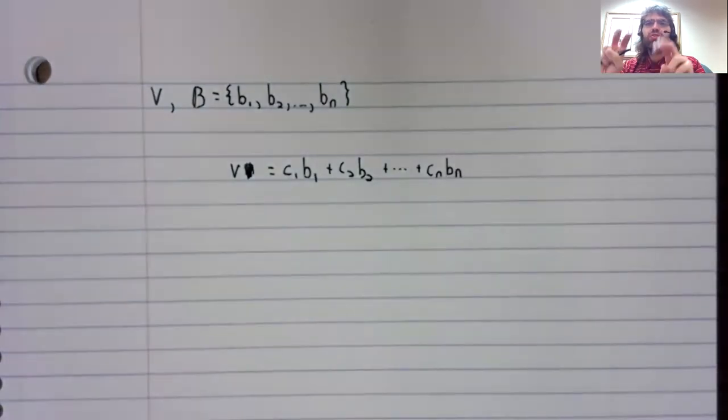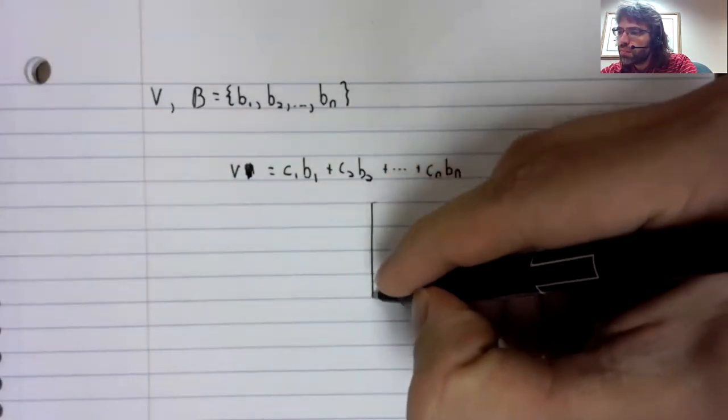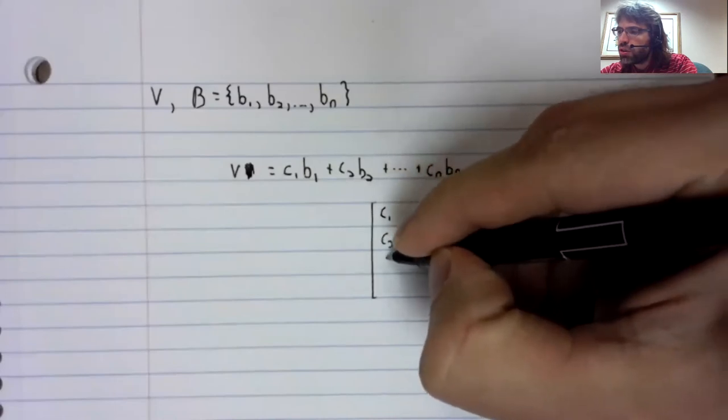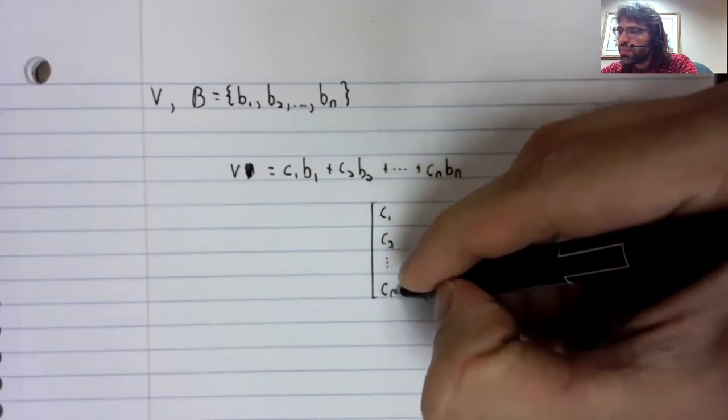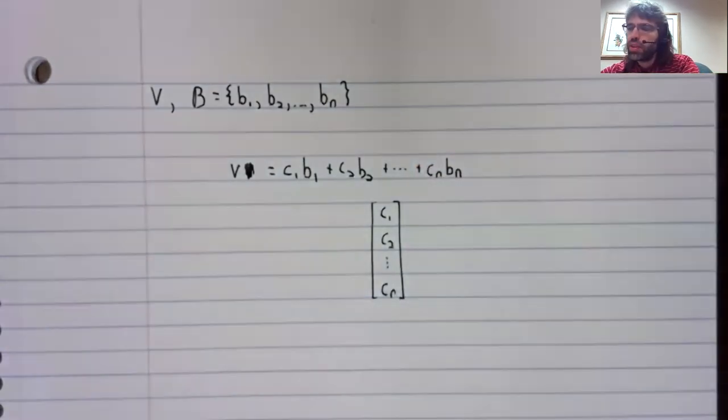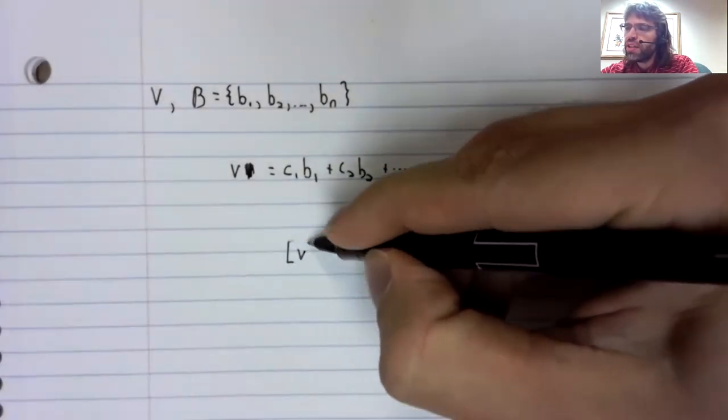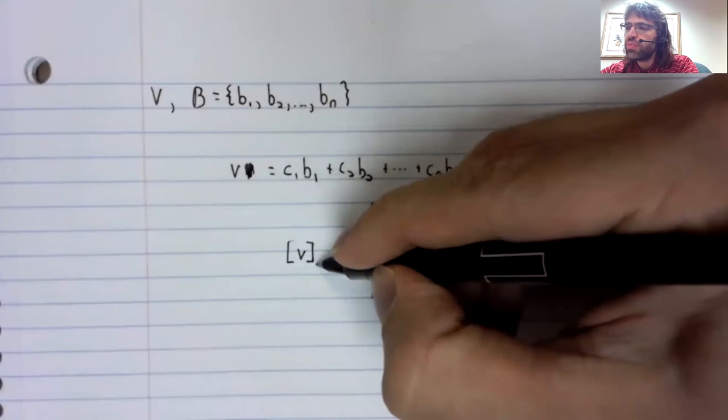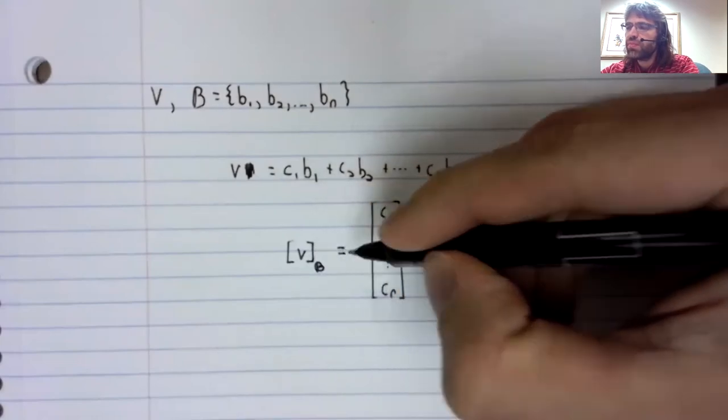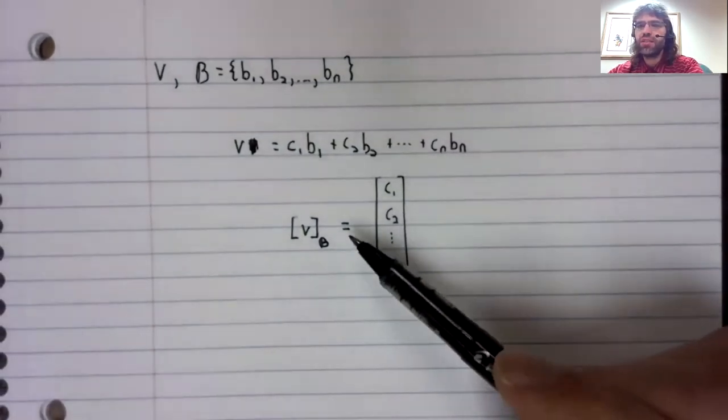And we can store V, a vector in V, as a vector in R^n. Our notation is to put V in brackets, put the name of the basis in the subscript and write it like this.